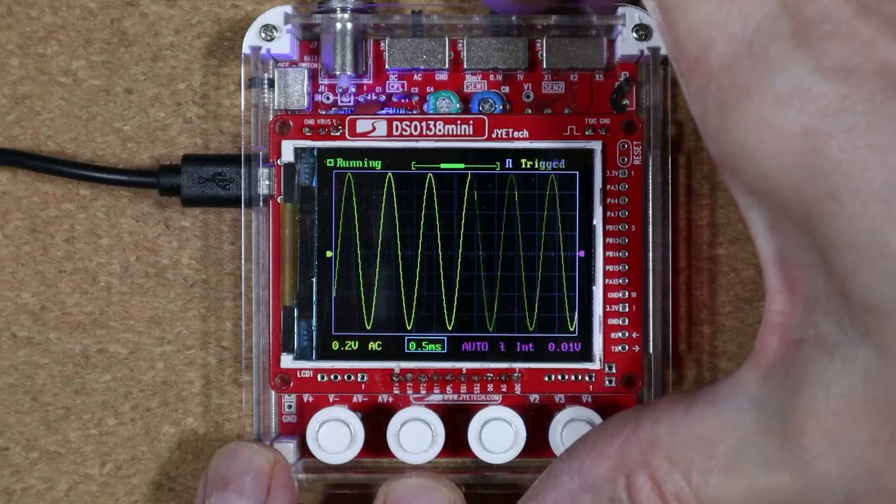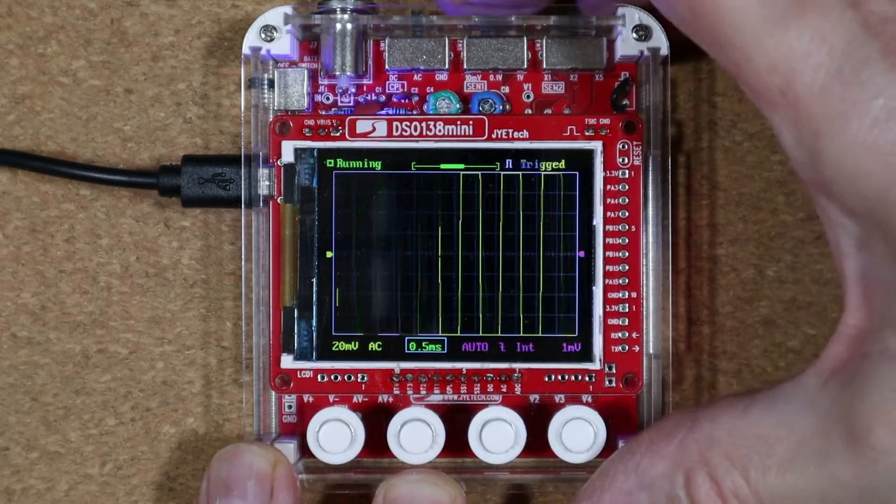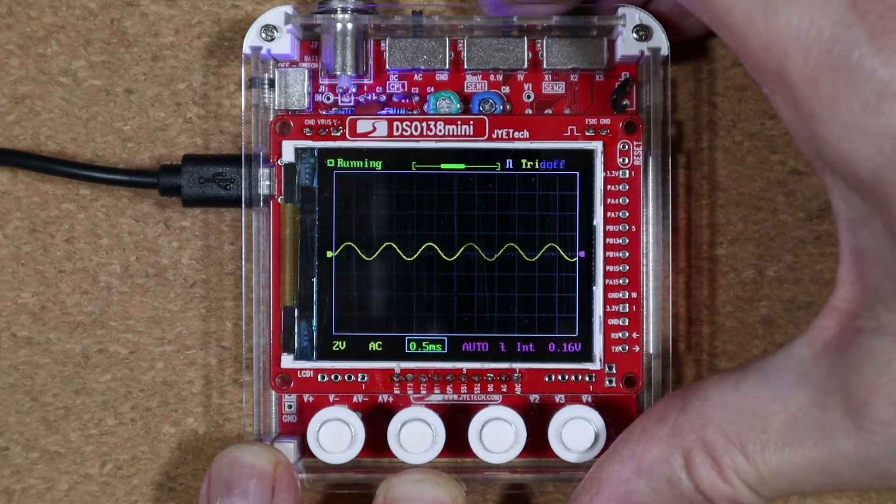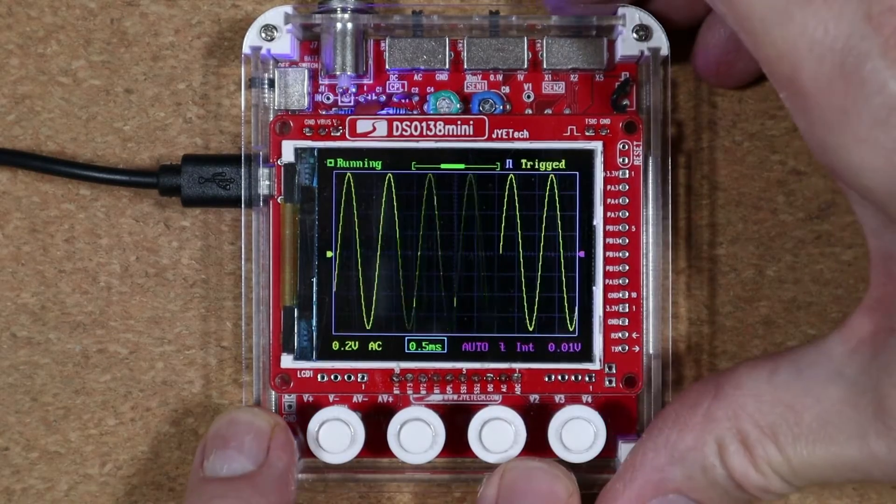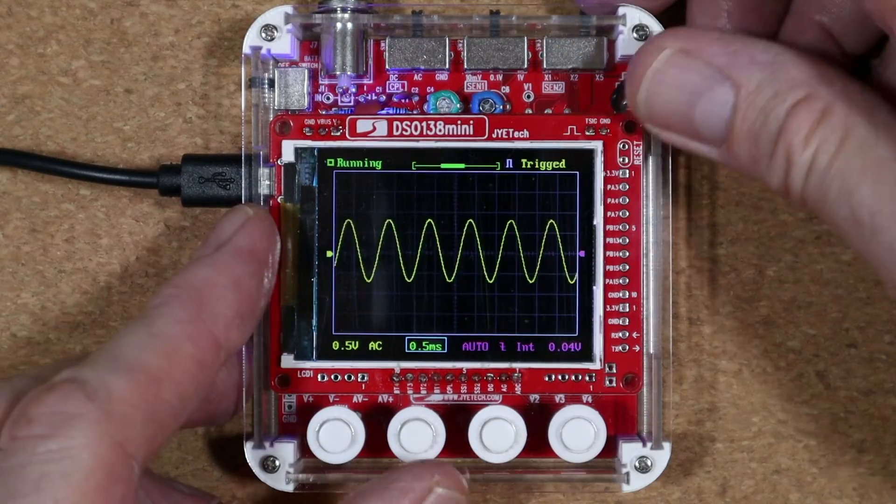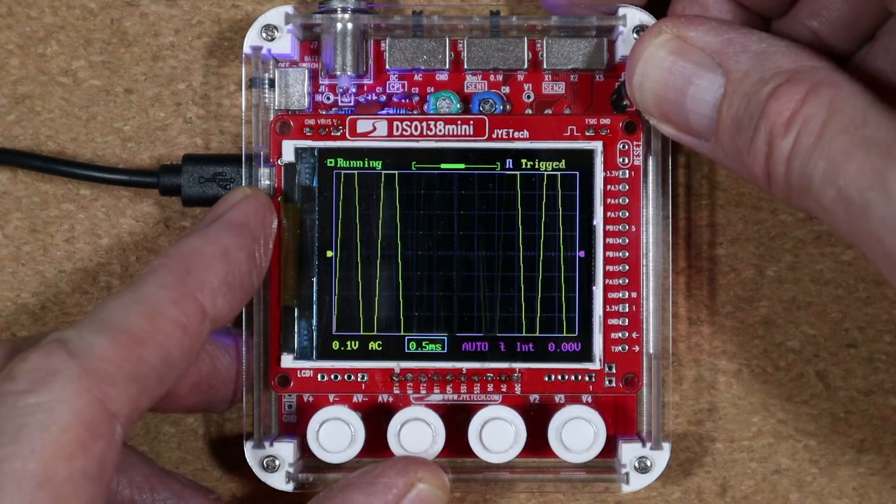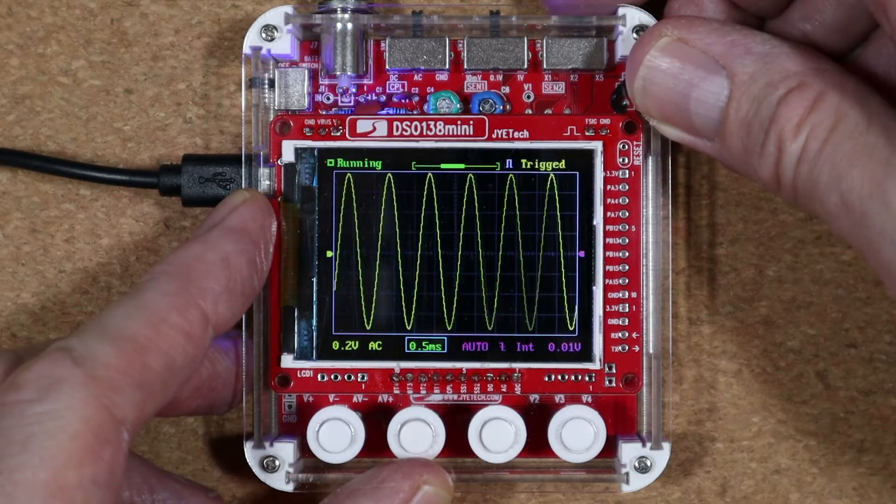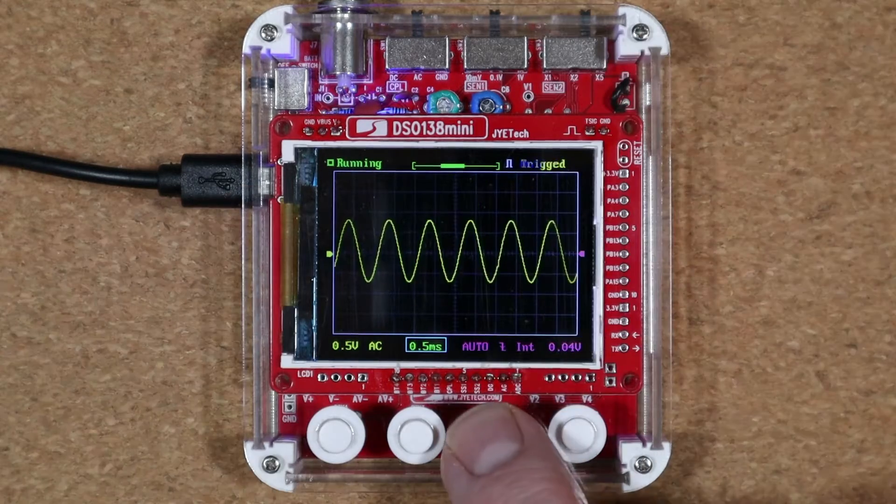I'm not going to go into an exhaustive list of features here or give a tutorial on its use, but you might want to know that the DSO138 mini has time-based settings from 10 microseconds per division to 500 seconds per division. The wide gain settings go from 10 millivolts per division to 5 volts per division.